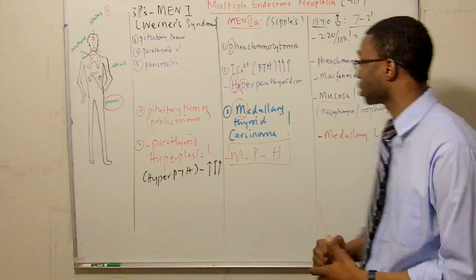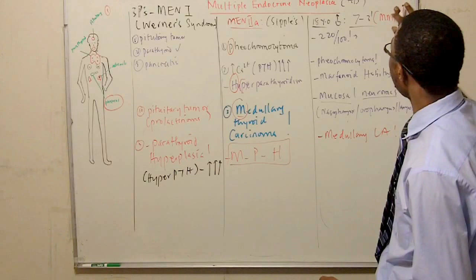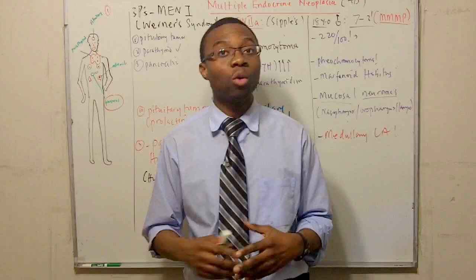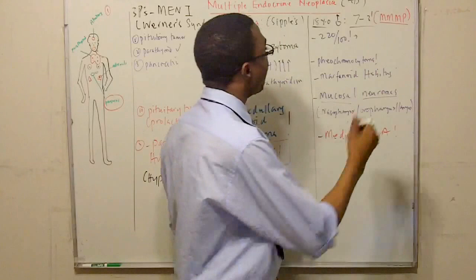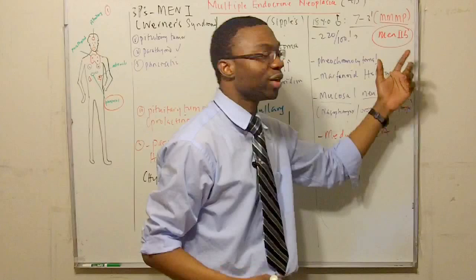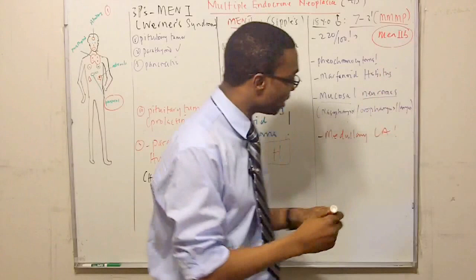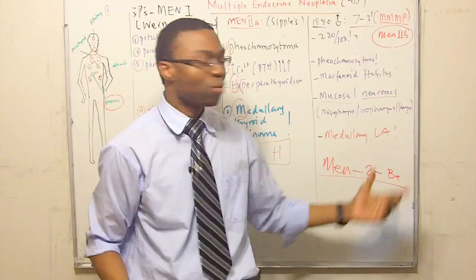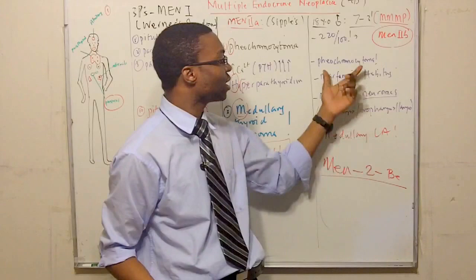But guess what? The only way you're going to remember him is because he's the guy that has a lot of M's and a P. So, how do I keep track of Werners? The older sister, Sipple, with the nipple, which is two A. And this is called MEN to be. Well, how do I remember him? He's the man to be. He's 18 years old. And he's also eventually going to grow up to be a man one day. So, he's man to be. He's a man to be. Because he's a man to be. He's going to be a male with Marfanoid habitus. He's got mucosal neuromas, medullary carcinoma. Remember? He's got all the three M's with just one P's.